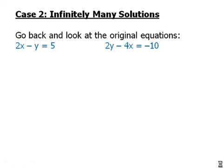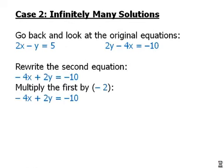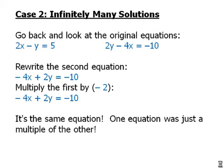How did this happen? Let's go back and look at the original equations. Rewrite the second equation. We'll just put the x first. Now, multiply the first equation by negative 2, and lo and behold, it's the same equation. One equation is just a multiple of the other. So, it's really just two copies of the same equation.